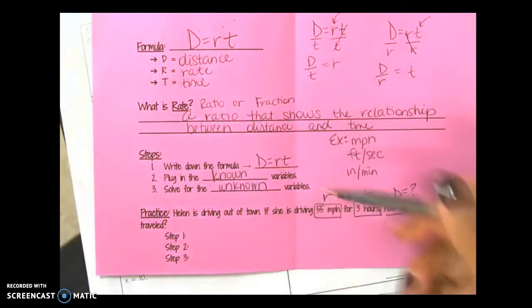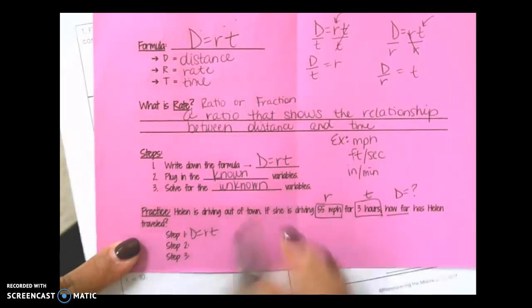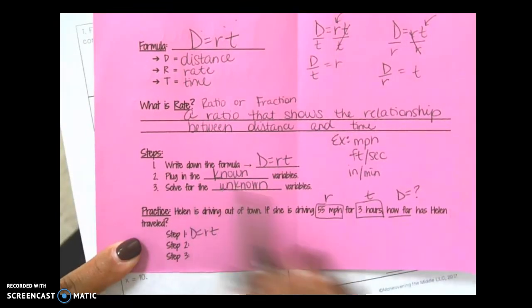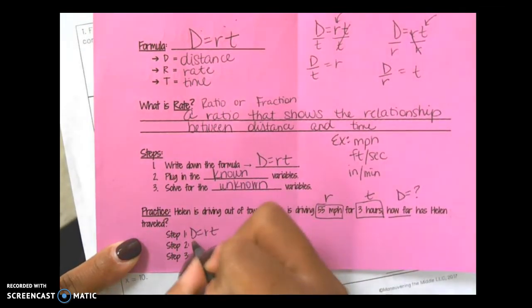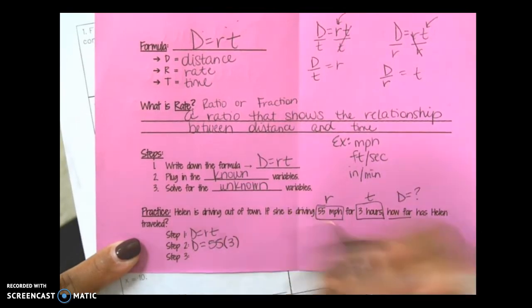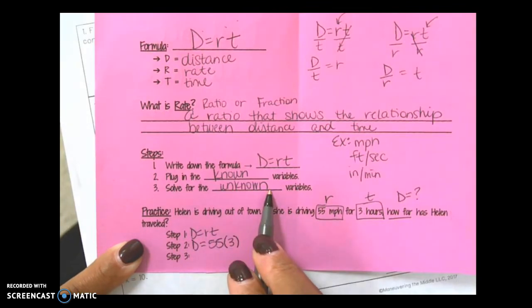Step one, write the formula. Step two, plug in the known variables. I know what R is and I know what T is. D equals 55 times 3. Finally solve for the unknown variable.